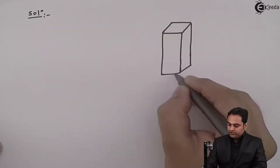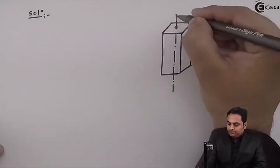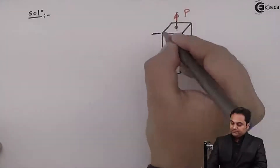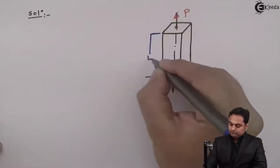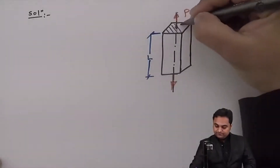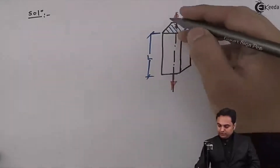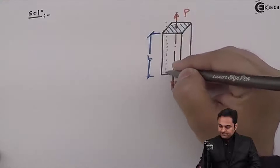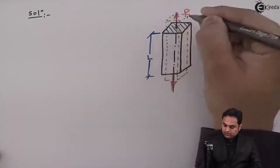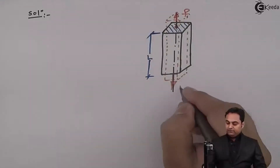Here is this square bar which is subjected to axial pull denoted by capital P, and this axial pull will be parallel to this length. Because of the action of this axial pull, the length of this square bar will increase, whereas the width and thickness will go on decreasing. So the length will increase and the other two dimensions — width and thickness — will go on decreasing under the action of a pull-type force.